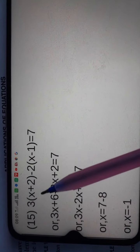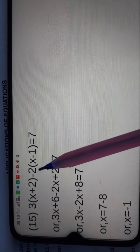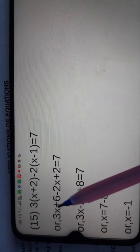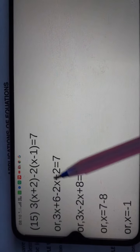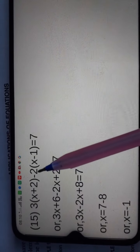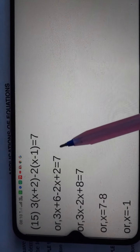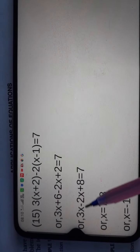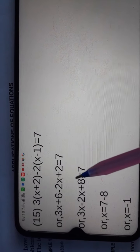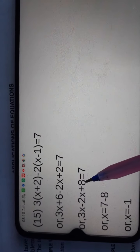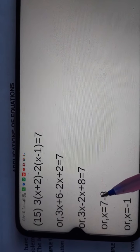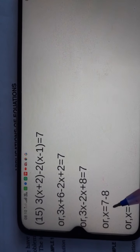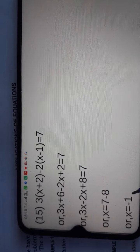Question number 15: 3(x plus 2) minus 2(x minus 1) is equal to 7. Opening brackets: 3x plus 6 minus 2x plus 2 is equal to 7. Collecting x terms: 3 minus 2 gives x. Collecting constants: 6 plus 2 is 8. Changing side: 7 minus 8 is minus 1. So x is equal to minus 1.